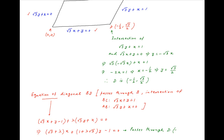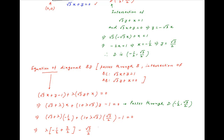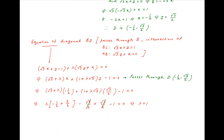This is the equation of diagonal BD, which passes through point D with coordinates (−1/2, √3/2). Substituting x = −1/2 and y = √3/2, and combining coefficients of λ, we get λ × (−1/2 + 3/2 − √3/2 + √3/2) + (−√3/2 + √3/2 − 1) = 0. Simplifying this equation gives λ = 1.